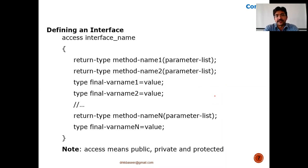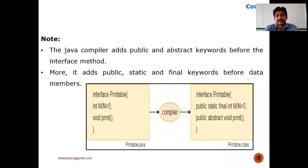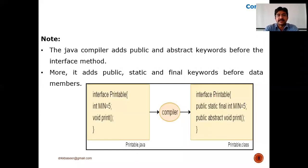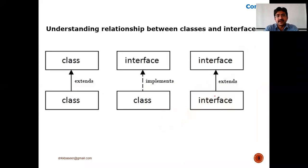Methods without body as well as methods with body can both be declared in an interface. We can also declare data members. This is an example of how the compiler treats an interface: for 'int MIN = 5', the compiler automatically converts it to 'public static final', and for 'void print()', it adds 'public abstract'.